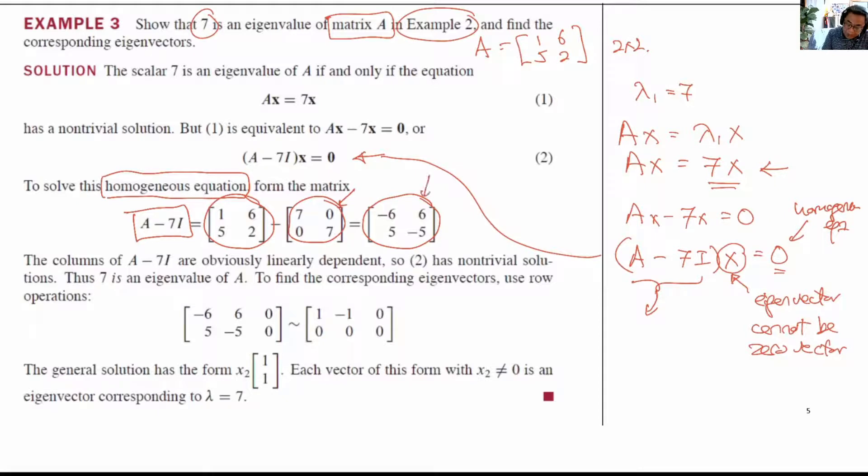You realize that the second column is negative 1 multiplied by the first column, implying that this matrix is singular. Or it has dependent columns.